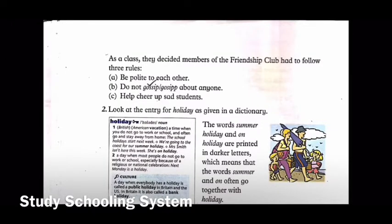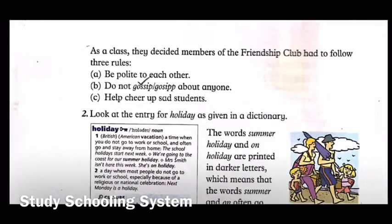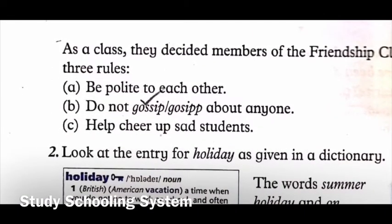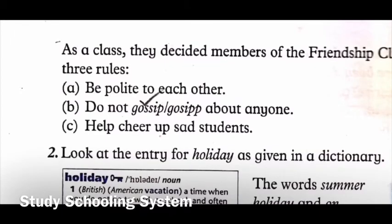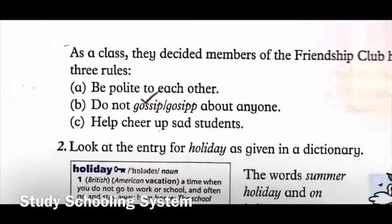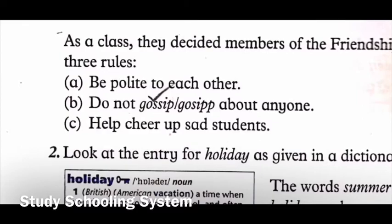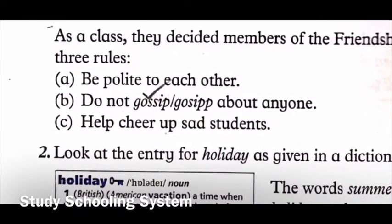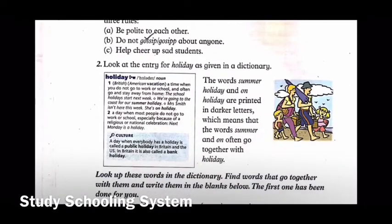As a class, the decided members of the friendship club had to follow three rules: A — be polite to each other; B — do not gossip/gossip about anyone; C — help cheer up sad students. Does gossip have two S's or one S and two P's? It has two S's and one P, so you will take the first one and cross out the second gossip.